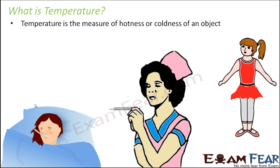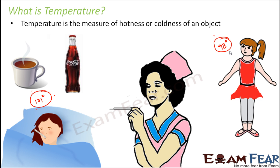A thermometer measures your temperature, which might be around 101 degrees when you have fever, and around 98 degrees when you are normal. Since 101 is greater than 98, the person with fever is hotter. This concept works not only with human beings but with various objects — for example, comparing a hot cup of coffee and a bottle of cold drink, the cup of coffee is hotter, so its temperature is more.